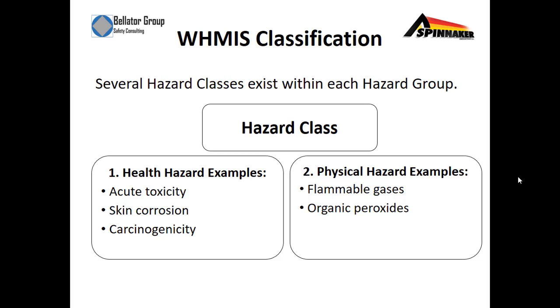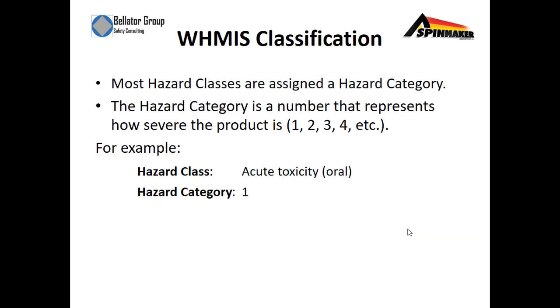Next, we move into the hazard classes. If you're referring to a health hazard, examples include acute toxicity, skin corrosion, and carcinogens. Physical hazards include flammable gases and organic peroxides.